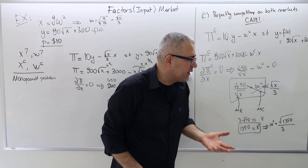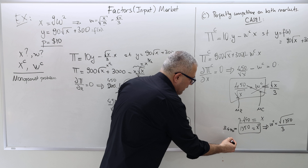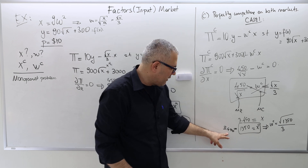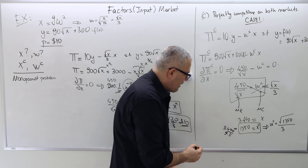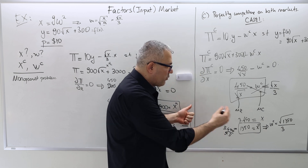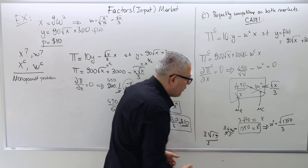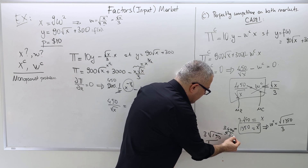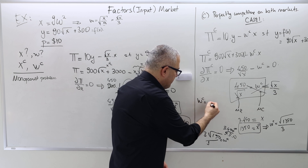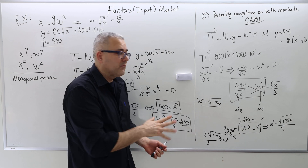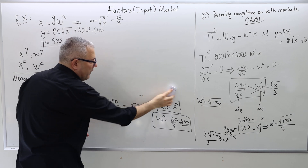To simplify the square root of 1350 without a calculator: 1350 equals 3 times 450 equals 9 times 5 times 10 equals 9 times 150. So the square root of 1350 equals 3 times the square root of 150. Therefore WC equals 3 times the square root of 150 divided by 3, and the threes cancel: WC equals the square root of 150. It's not an integer, but the square root of 144 is 12 and the square root of 169 is 13, so it's approximately 12-point-something.